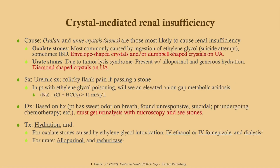Diagnosis is based on history; urinalysis with microscopy may show stones, or you can have patients strain their urine. For oxalate stones from ethylene glycol intoxication, we inhibit alcohol dehydrogenase to reduce oxalate formation — using IV ethanol or IV fomepizole; fomepizole is preferred. Dialysis is also used. For urate stones, usually caused by tumor lysis syndrome, use allopurinol and rasburicase. Urate stones are diamond-shaped crystals.